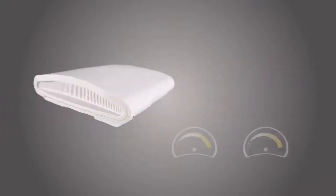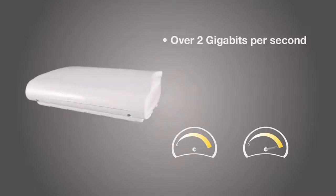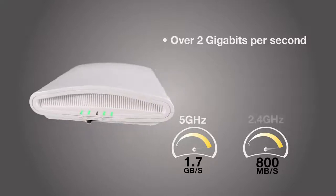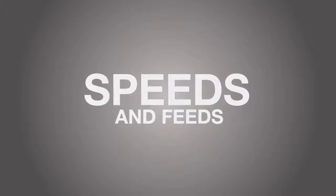The combination of these technologies within the R710 results in insanely fast data rates of over 2 gigabits per second, 1.7 gigabits over the 5 gigahertz band, and 800 megabits over the 2.4 band. With the R710, Wi-Fi has never gone faster and farther.